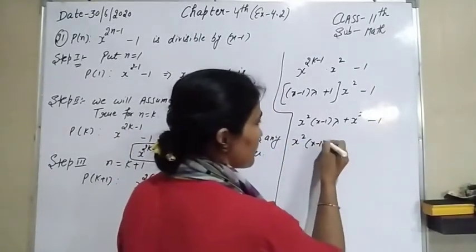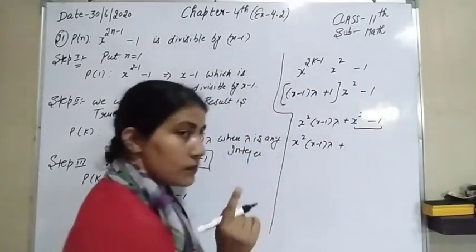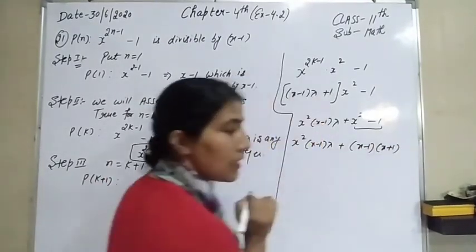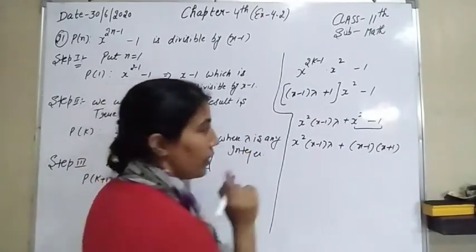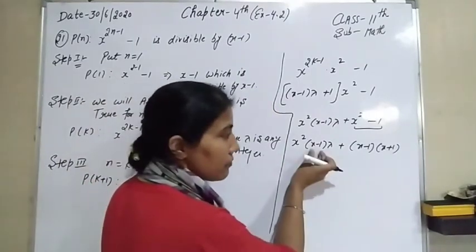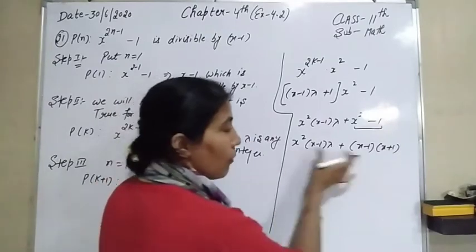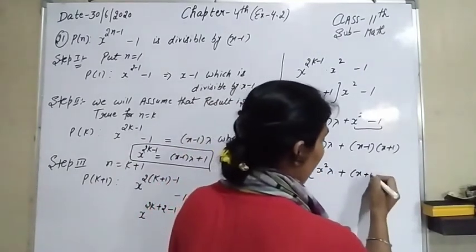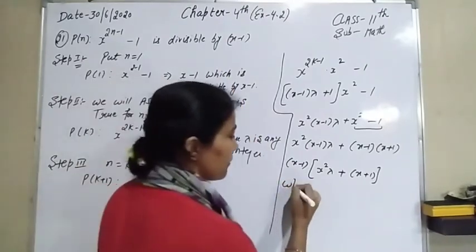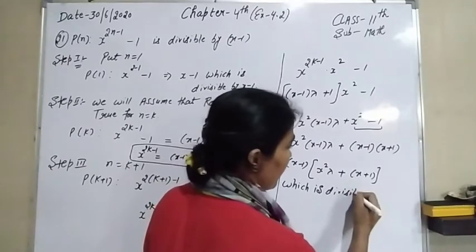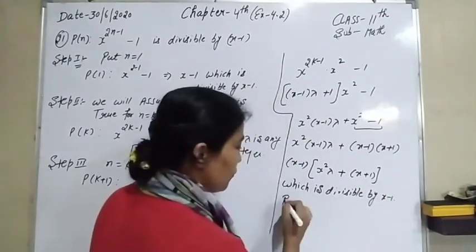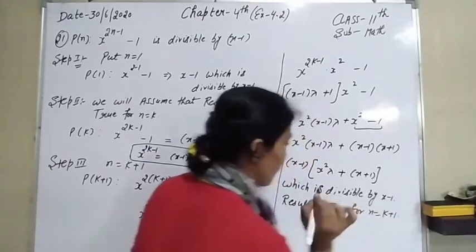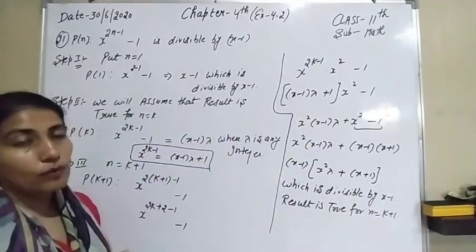After doing the multiplication: x squared into (x minus 1) into lambda, plus x squared minus 1. Now we can use the identity a squared minus b squared, since x squared minus 1 can be written as 1 squared, which equals (a minus b)(a plus b), where a is x and b is 1. From both terms we can take (x minus 1) as a common factor. So we get (x minus 1) into (x squared lambda plus x plus 1), which is divisible by x minus 1. So the result is true for n equal to k plus 1. Hence, by the Principle of Mathematical Induction, the result is true for all n belonging to natural numbers.